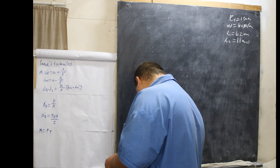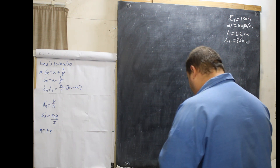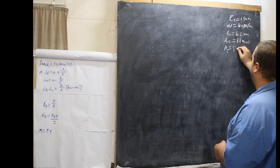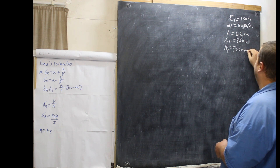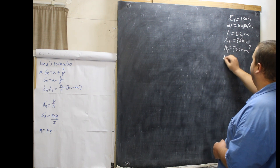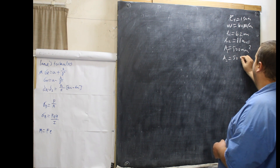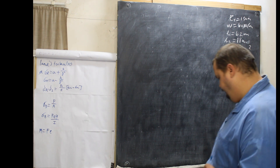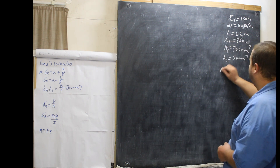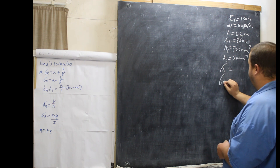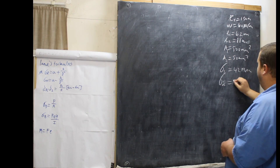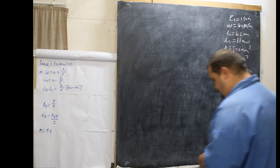The total cross-sectional area of the cable is 500 millimetres squared, so the total area is 500 mm². The area of the steel core is 50 mm². The maximum allowable stress in the steel and aluminium are 42 megapascals and 14 megapascals respectively.